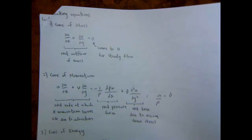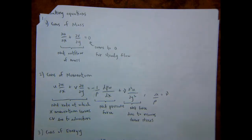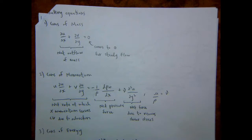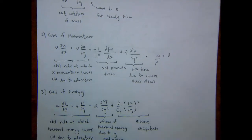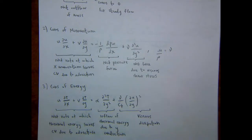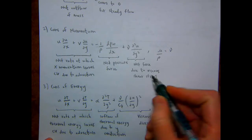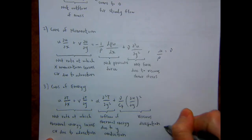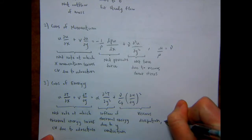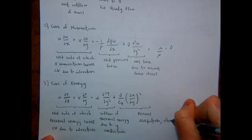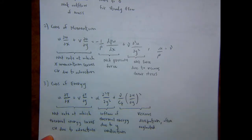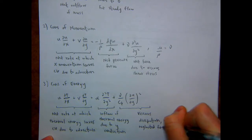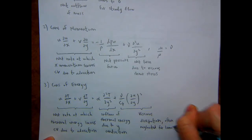I want to make a couple of comments about these equations, because the next thing we're going to do is non-dimensionalize them. I want to point out that the viscous dissipation term is often neglected for laminar flow. The first solution we're going to do is parallel laminar flow over a flat plate, and we're going to neglect that term.